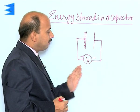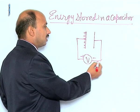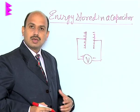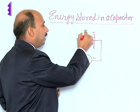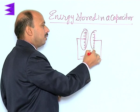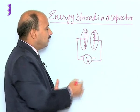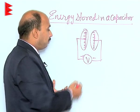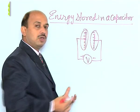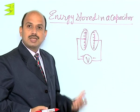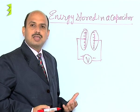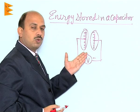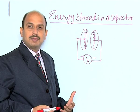Whatever number of electrons come to one plate, the same number are transferred from the other plate, leaving negative charges there. So one plate becomes positive and the other becomes negative, creating a potential difference between the two plates. When the potential of the plates becomes equal to the battery voltage, no more charge is transferred and the capacitor is fully charged. The charges keep storing as long as the potential difference is maintained.